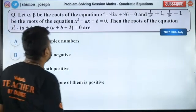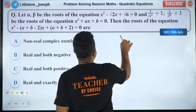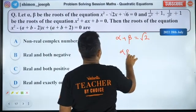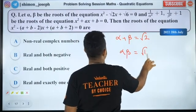So come and solve this super quickly. So the number is alpha plus beta sum of the roots is √2, alpha beta product of the roots is equal to √6. This is okay.